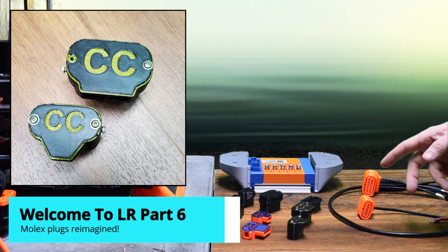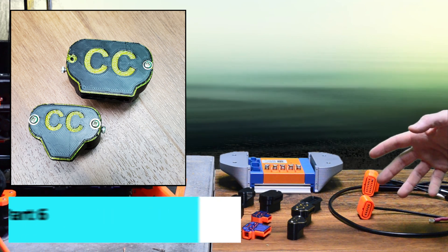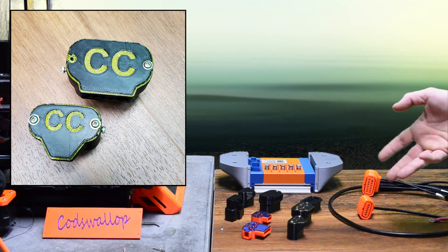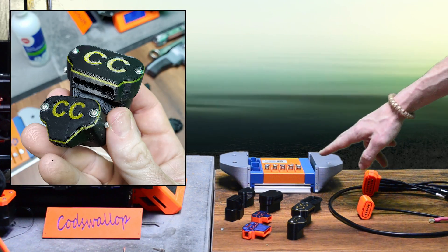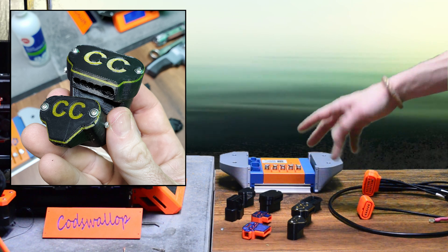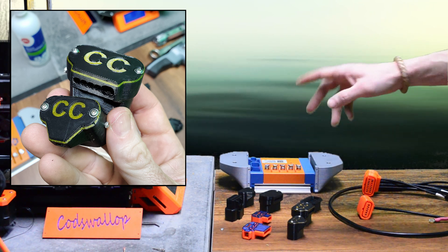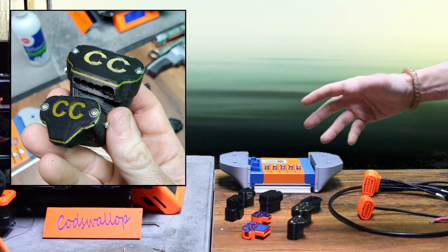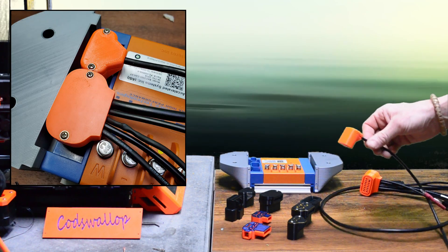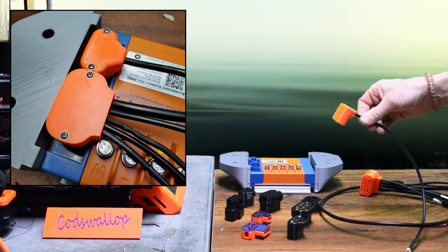This week's video on the Lightning Rods build looks at the wiring that will carry things like the hall signals, throttle and display data to and from the ASI controller. To overcome ergonomic issues with the standard Molex connectors, I've designed a new version which directs the wiring at a 90 degree angle in a more useful direction.